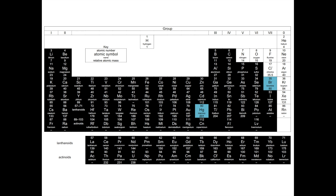Let us look at the elements in the periodic table. Most elements exist in the solid state at room temperature, as shown in black. The only metal which is a liquid at room temperature is mercury, and the only non-metal which is a liquid at room temperature is bromine. These two elements are shown in blue. The remaining elements, including the noble gases, are gases at room temperature.